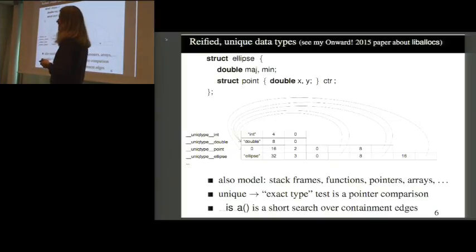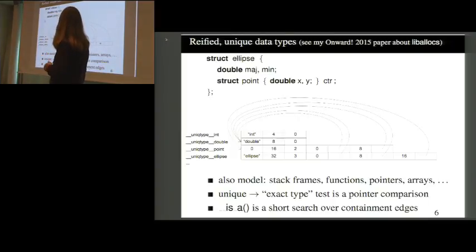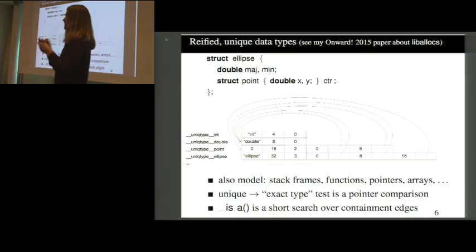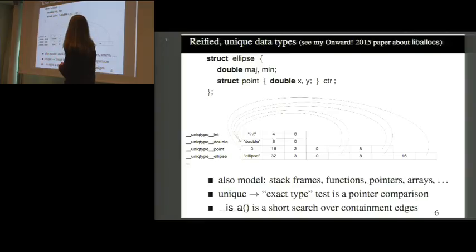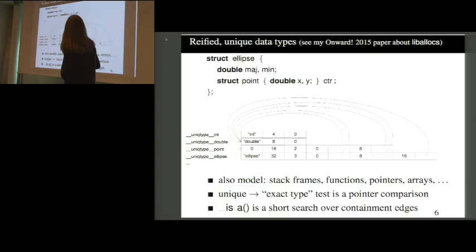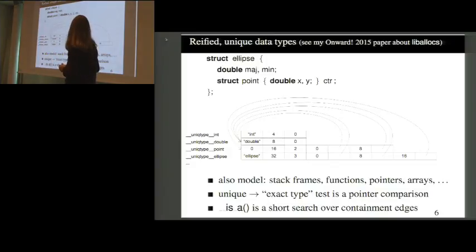Because we keep type information unique, we can do a primitive test — checking if something is type int — by a simple pointer comparison. To implement the isa check, we do a short search over this structure. Say the runtime tells me I've allocated an ellipse at offset zero on the heap, and I want to cast it to double. At offset zero we find a point, not a double, so we recurse down and find a double. The check passes because at that offset we do indeed have an instance of that data type.